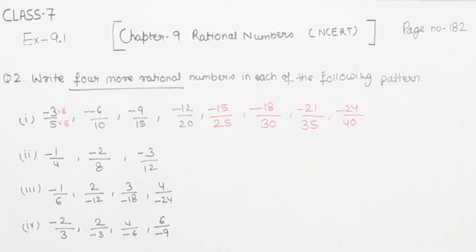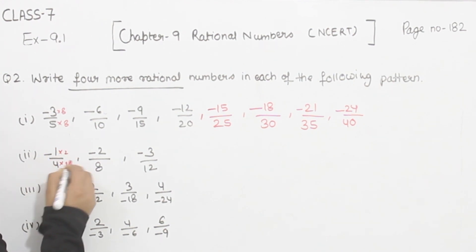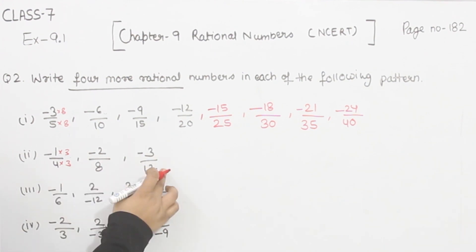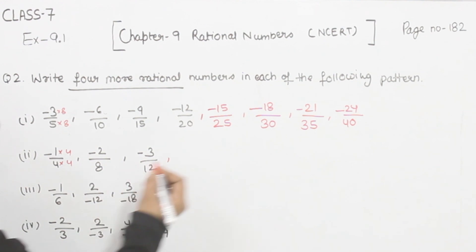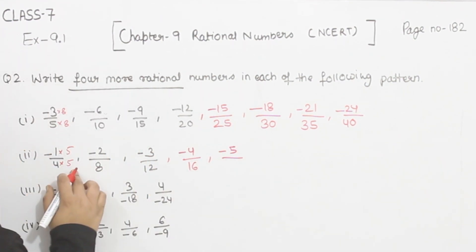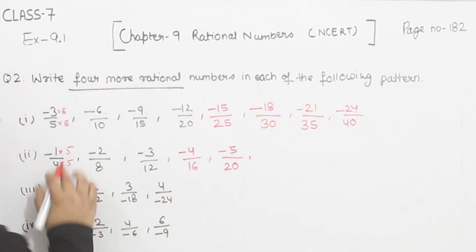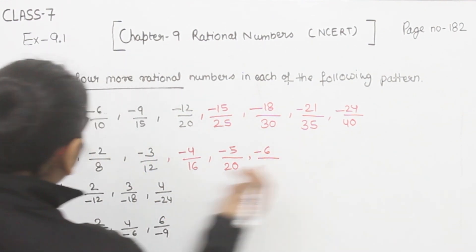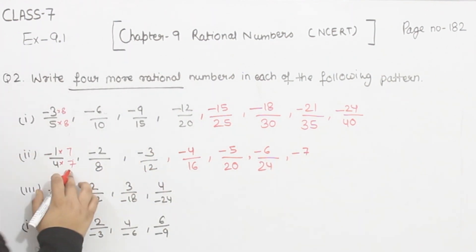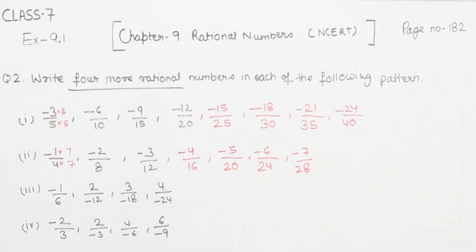Now comes part 2. We have minus 1 by 4, minus 2 by 8, and minus 3 by 12. Multiplying by 2 gives minus 2 by 8. Multiplying by 3 gives minus 3 by 12. Multiplying by 4 gives minus 4 by 16. Multiplying by 5 gives minus 5 by 20. Multiplying by 6 gives minus 6 by 24. These are 4 more rational numbers in the given pattern.